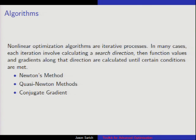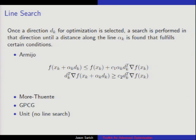Most of these methods are iterative — well, they're all iterative. You define a point, figure out what direction you need to go to get a better point, and then search along that direction. TAO has various line searches for finding a good point along that direction, and just like PETSc when you want a different KSP or PC solver, you can go from the command line and choose a line search.